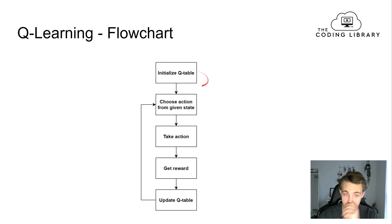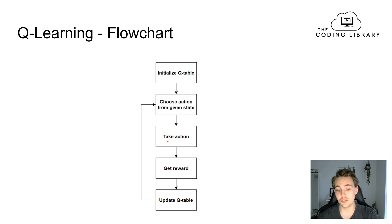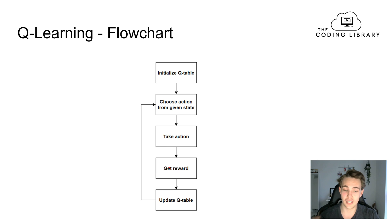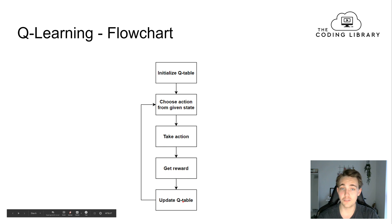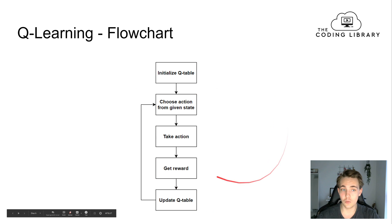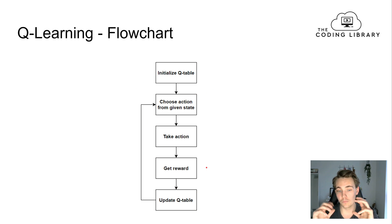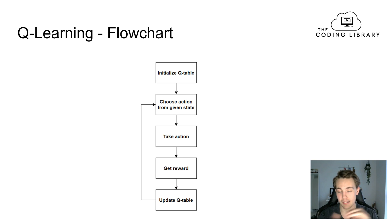First, we implement a function that initializes the Q-table. Then we need a function that chooses an action from the given state. Then a function that takes an action and returns a new state along with a reward. When we get our reward, we update the Q-table with the Q-function. We repeat this procedure for each episode — one flow in the flowchart corresponds to taking one action from one state, updating the Q-table, and doing this multiple times across many training episodes.